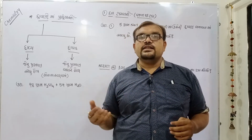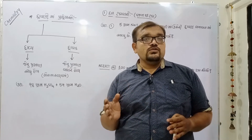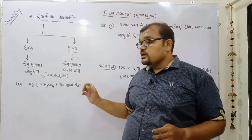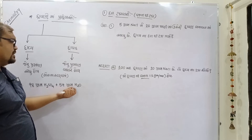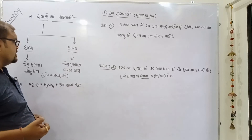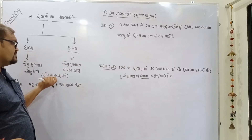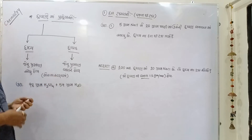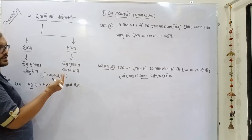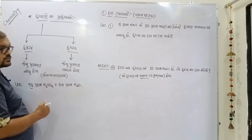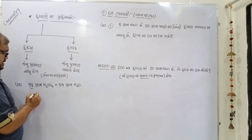જેનું પ્રમાણ ઓછું હોય એને આપણે દ્રાવ્ય તરીકે ઓળખીએ છીએ. આપણે ઉદ્યારણ ની મદથી સમજ — મોલ ના સ્વરૂપ માં. આ રીતની ભૂલ થતી ઓઈ છે. H2SO4 ૯૮ ગ્રામ આ રીતે આ ઉદ્યારણ સમજીએ.